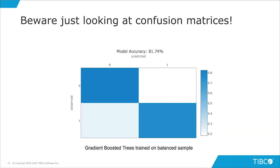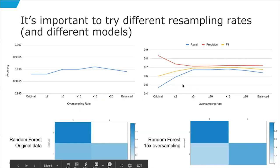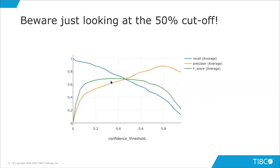In fraud detection it might be okay to have lots of false positives as long as you have great recall on fraudulent events — if you have resources to investigate them all, you'd go with gradient boosted trees. This brings me to the final point: think carefully about the confidence cutoff. Looking at confusion matrices assumes a 50% threshold, but adjusting the confidence threshold changes things a lot. For random forest, the best F1 score is actually around a 30–40% confidence threshold. Bottom line: upsampling can be really effective — it depends on the model, the data, and your goal.